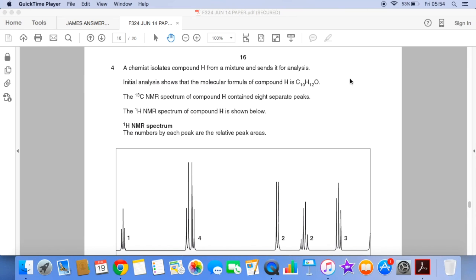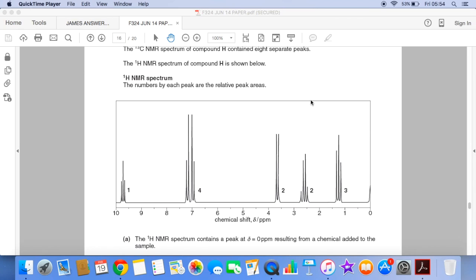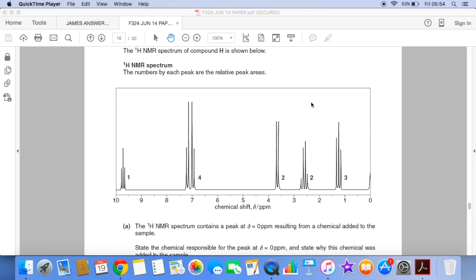We're told that its molecular formula is C10H12O. It has 8 peaks in its carbon-13 NMR and its proton NMR is shown in the spectrum there. So you can see we've got splitting patterns for each peak and we've also got the peak areas.